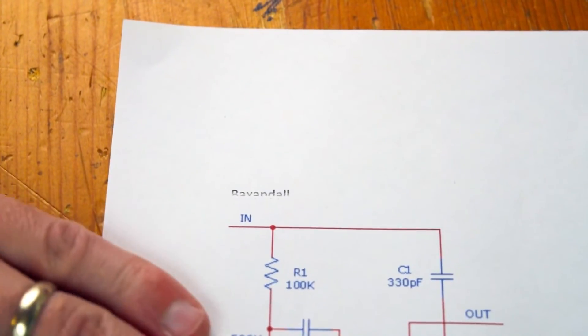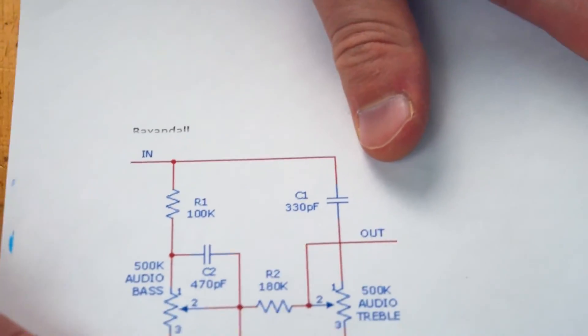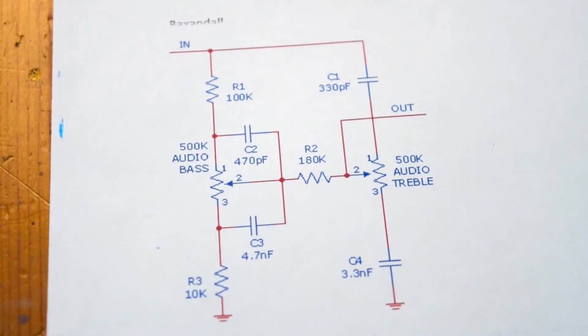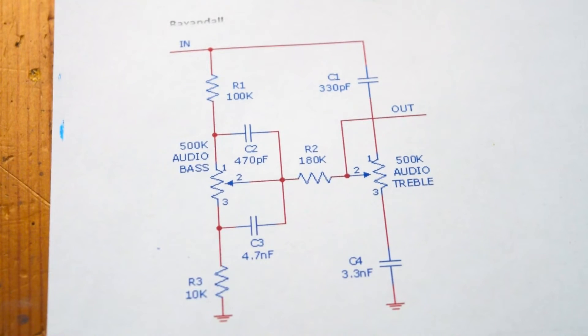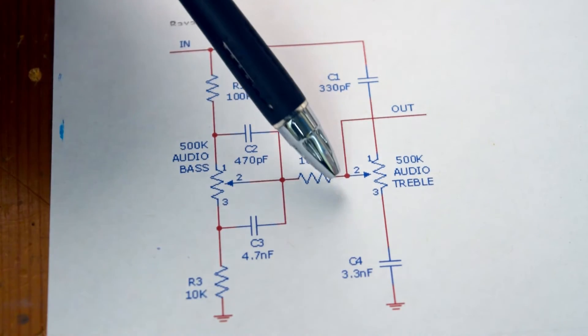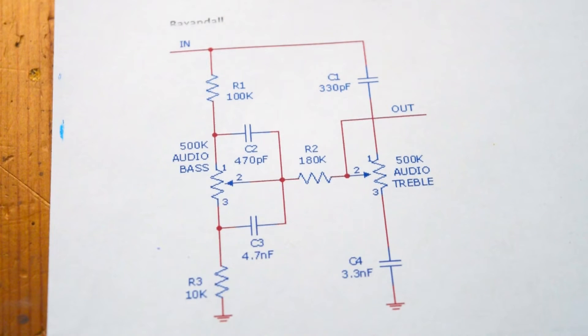And then the last thing I want to talk about is this. What you are looking at right now is the Baxendal tone stack schematic. Now you've got an input and an output and a bunch of stuff in between. This ends up being two controls, bass, which is right here, and then treble, which is right here. And the Baxendal tone stack, I like it a lot in theory because it could give you the potential to be pretty neutral, or then it also could give you the ability to give you boost and cut of actually all three, bass, mid, and treble frequencies.